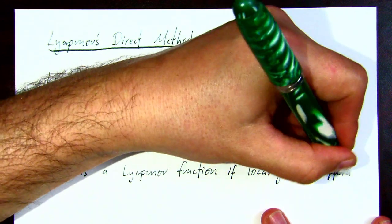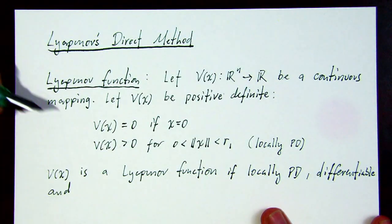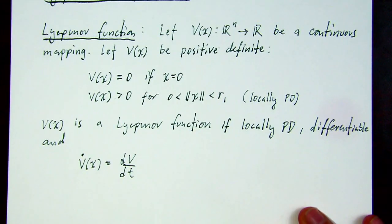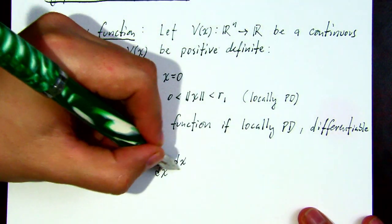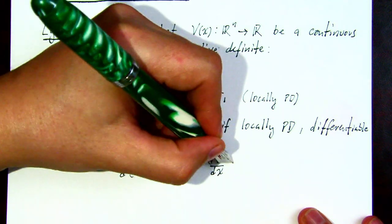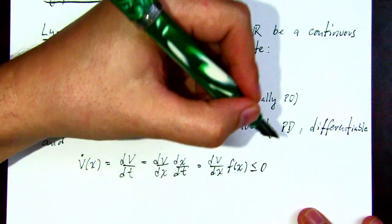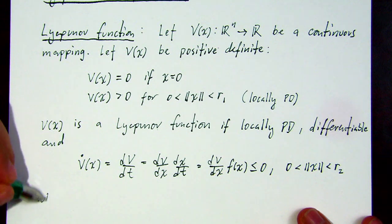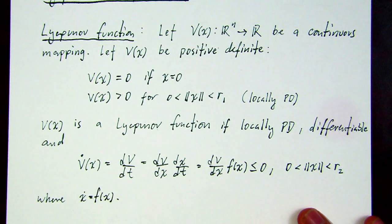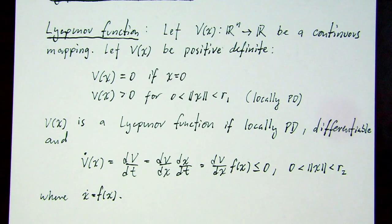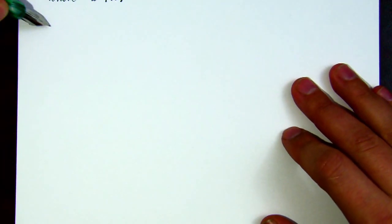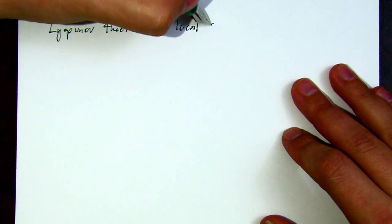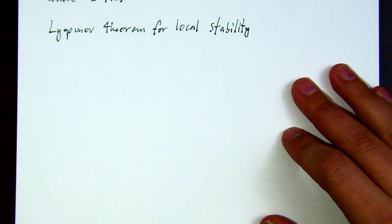The function V becomes a Lyapunov function if not only is it locally positive definite and differentiable, but the time derivative of V along the trajectories of the system is negative semi-definite within some region of the equilibrium. The evaluation along the trajectories comes from substituting f(x) for dx/dt.